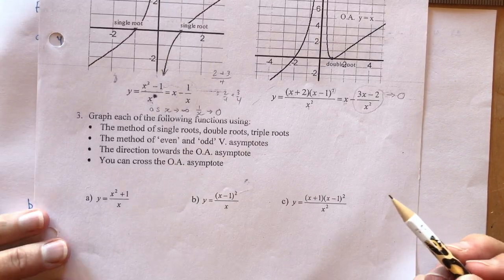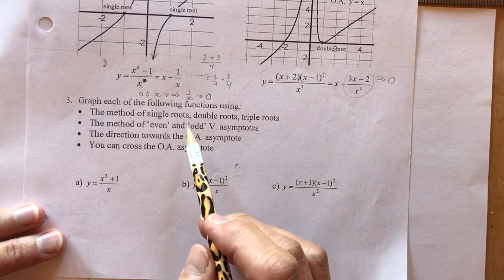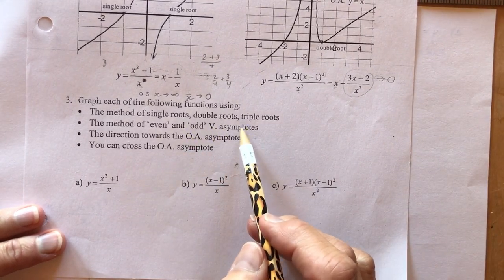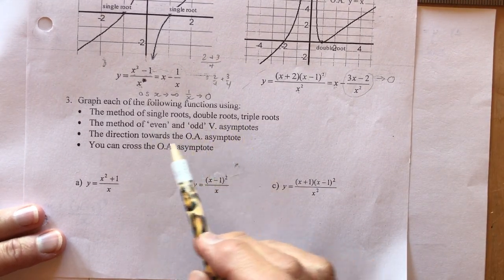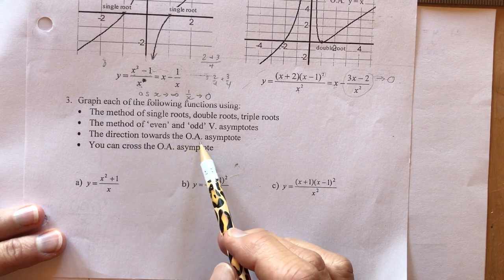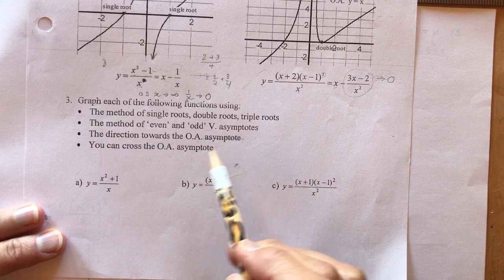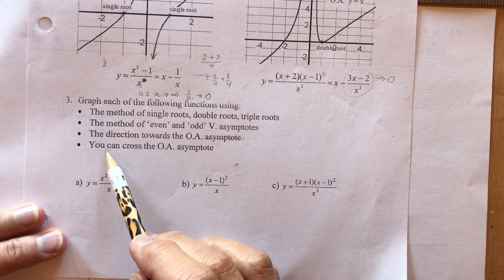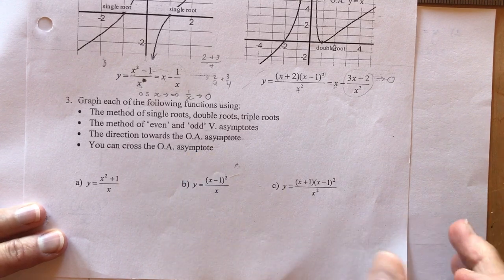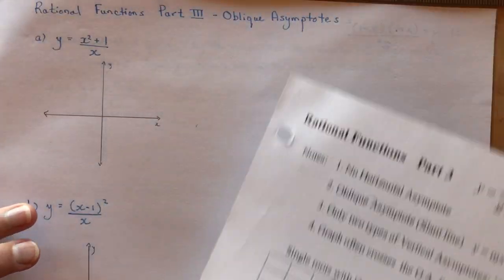Now we'll graph the following functions using the method of single roots, double roots, triple roots, even and odd vertical asymptotes, the direction towards the oblique asymptote, and you can cross your oblique asymptote. Let's get to work on these.